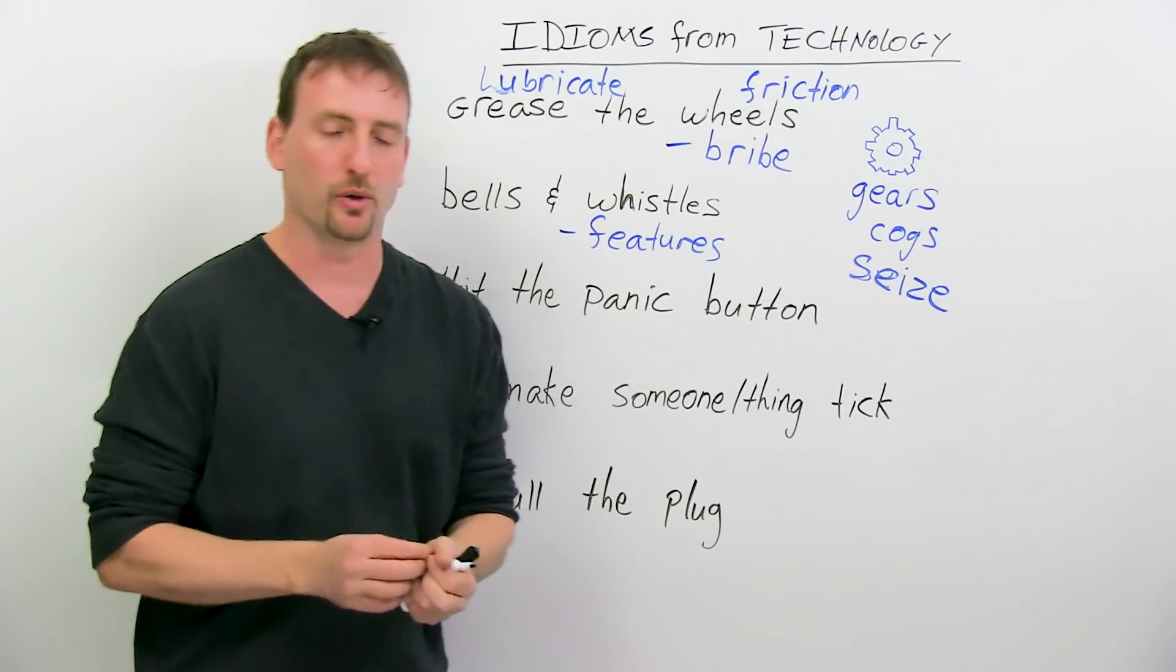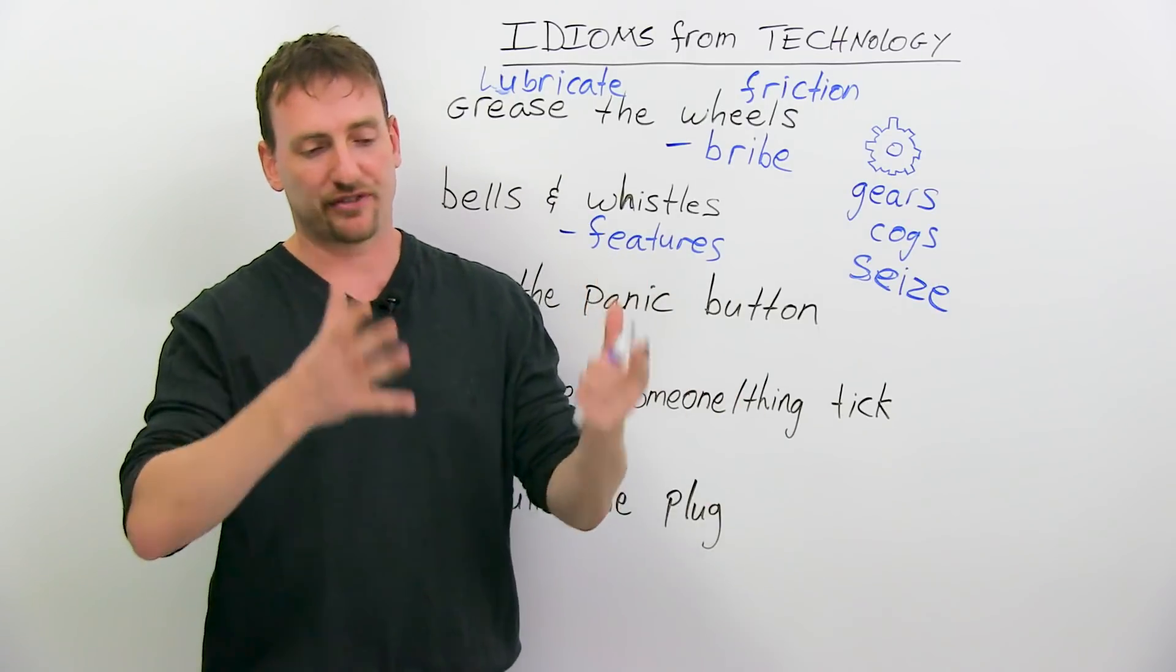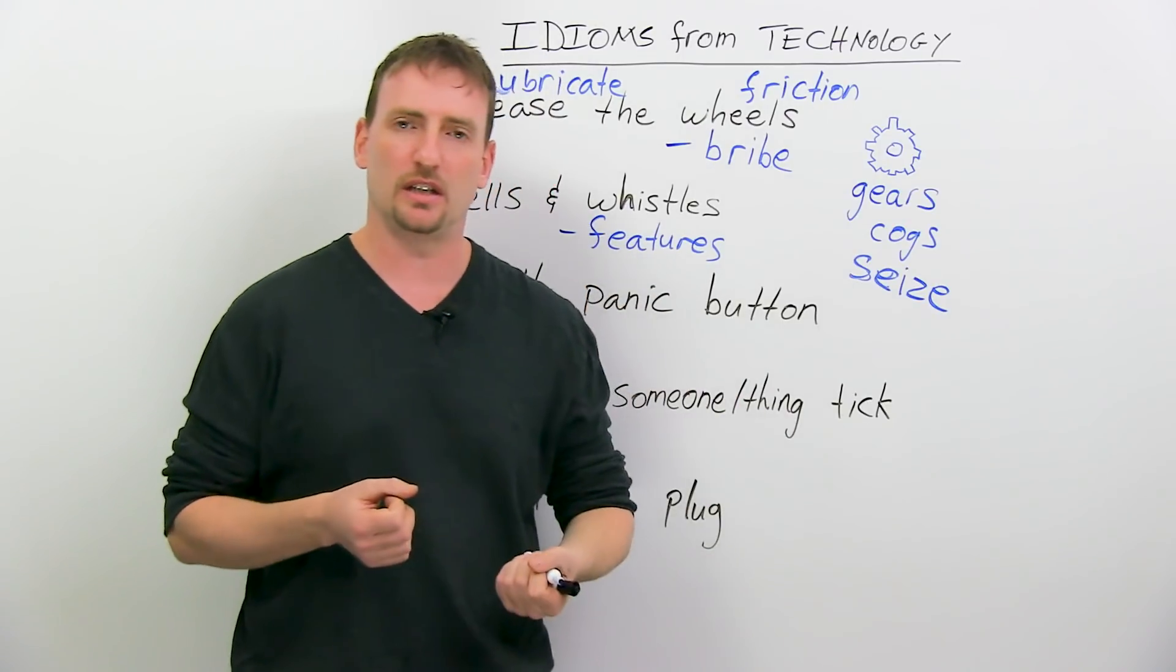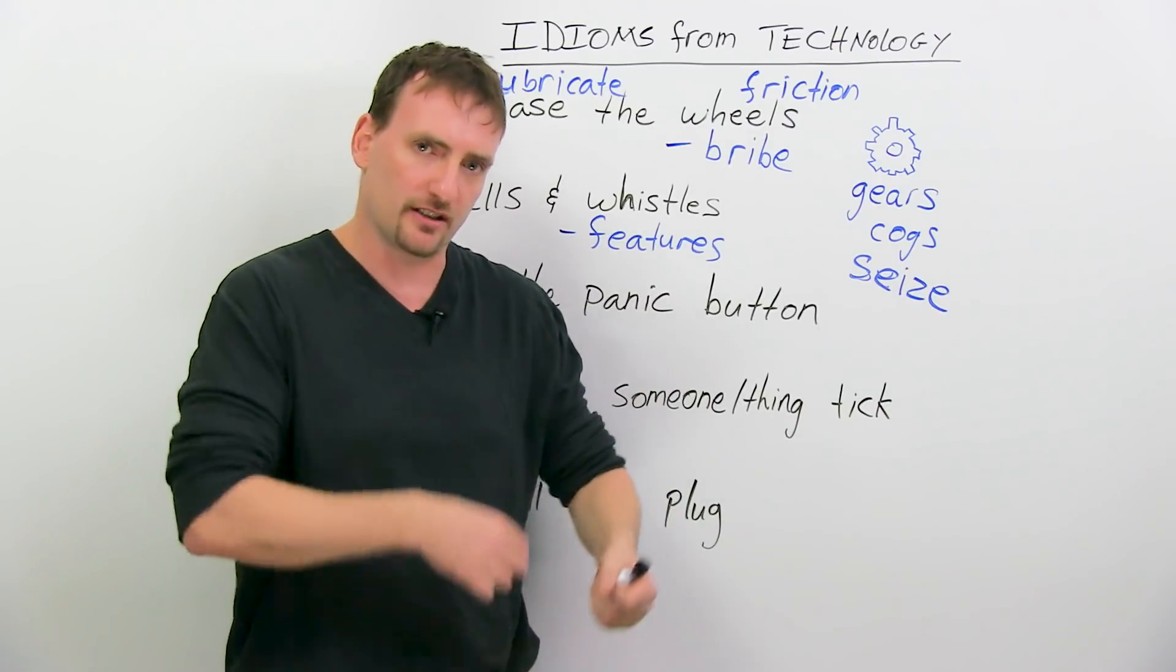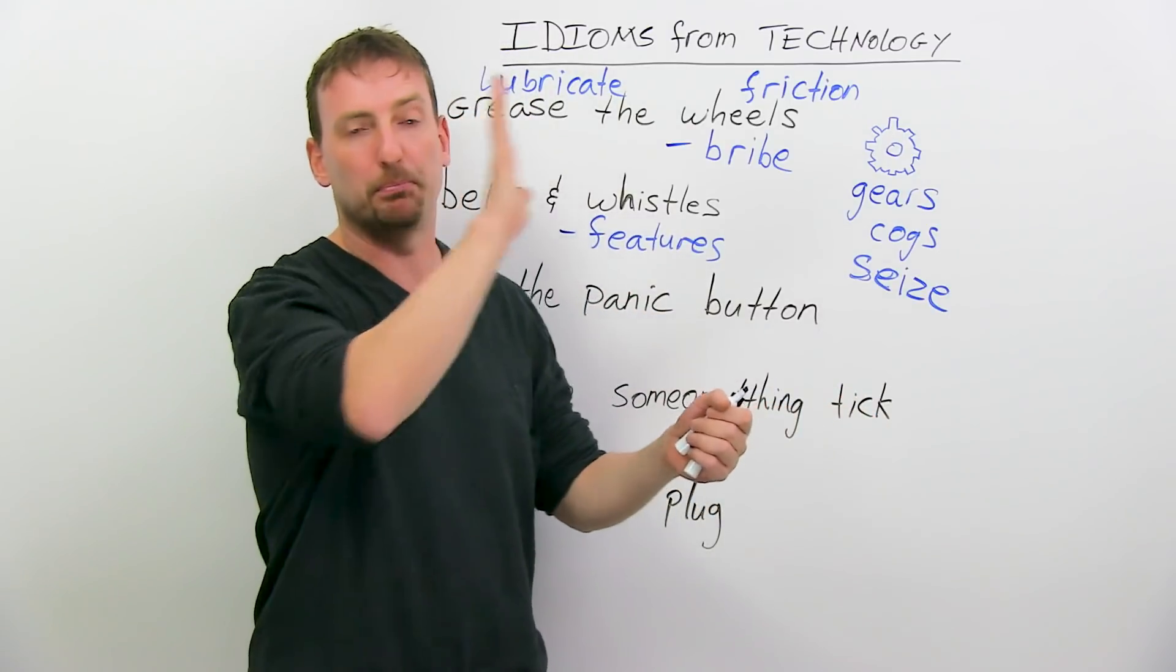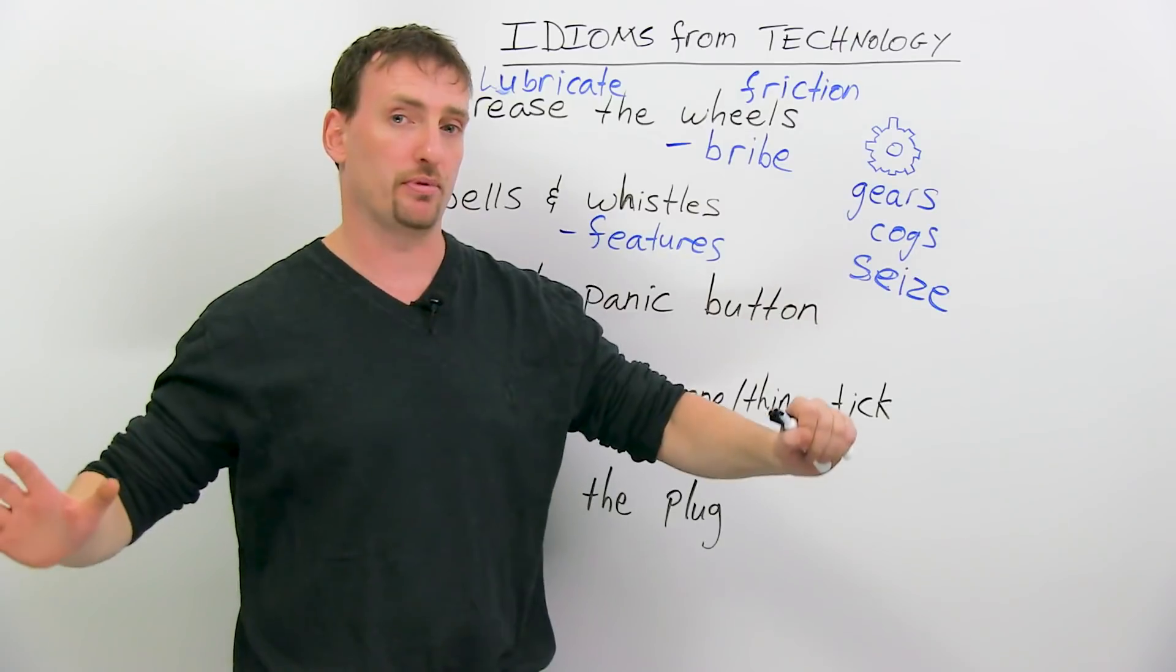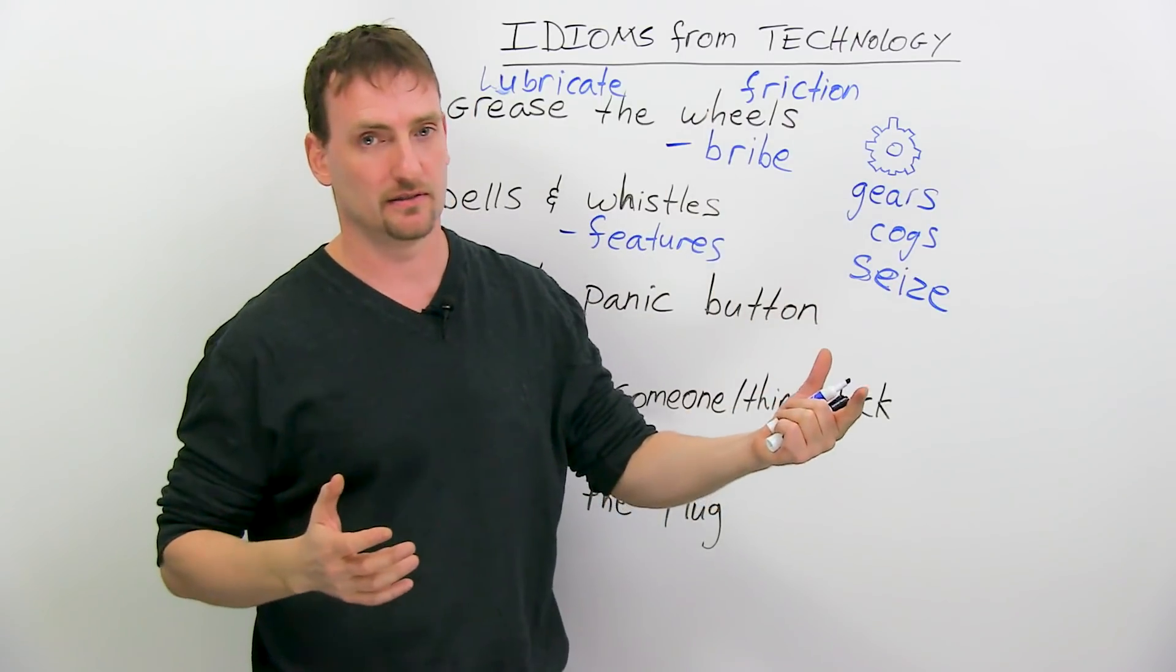Hit the panic button. In a factory that has a lot of machinery, if somebody gets caught in the machine, like let's say your shirt gets caught in the belt and you start getting dragged, all over the factory there's a button that you can press it, and all the machines stop. That's called the panic button.